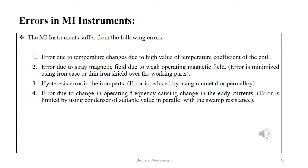Like the PMMC instrument, the MI instrument also suffers from the following errors: error due to temperature changes due to the high temperature coefficient of the coil; error due to stray magnetic field due to the weak operating magnetic field, minimized by using an iron case or thin iron shield over the working parts; error reduced by using mu-metal and permalloy; and error due to change in operating frequency causing change in the AC current, limited by using a condenser of suitable value in parallel with the swamping resistance.